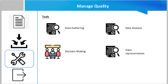Now talking about the tools for this process: the first tool is data gathering, which includes quality checklists. These verify that a set of required steps have been performed or check if a list of requirements has been satisfied. These checklists are usually based on the acceptance criteria included in the scope baseline. Then there is data analysis.